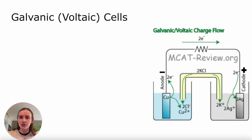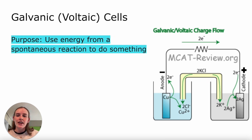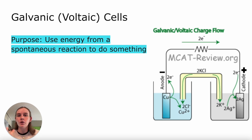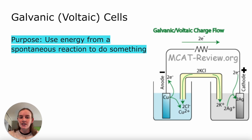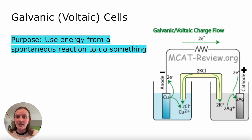The first type of cell we're going to talk about are galvanic cells, also known as voltaic cells. The purpose of these cells is to use energy from a spontaneous reaction to do something — that can be to power an electric car, to spin a turbine. Anything harnessing the energy from a spontaneous reaction to do something is going to be using some kind of galvanic cell. Because of that, you can think of these cells kind of like a battery.